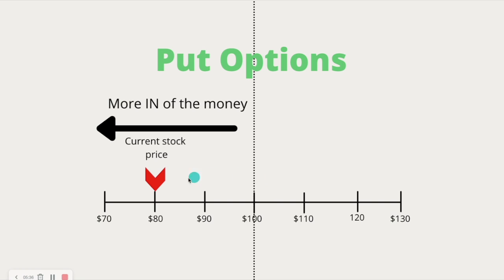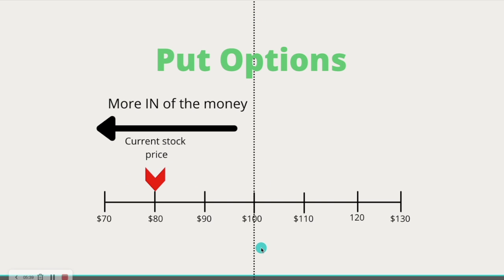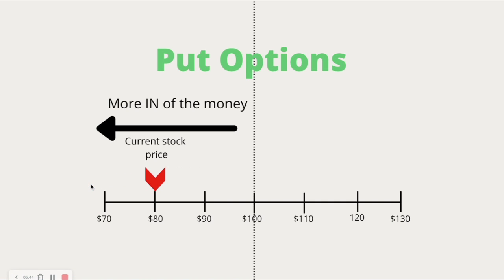Now, as the current price of the stock moves down — let's say we buy the $100 strike — as the stock moves down in this direction, our calls become more and more in the money and Delta gets higher and higher. And that's something to know: the more in the money you are, the higher the Delta.